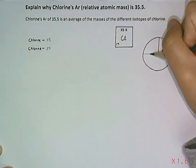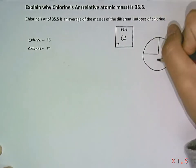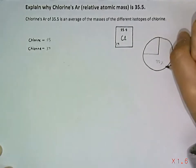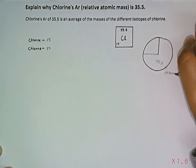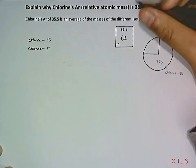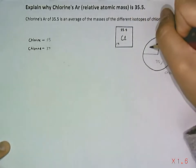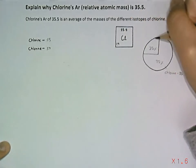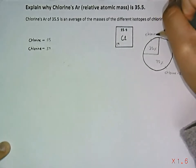75% of the isotopes are chlorine 35. And then, the remaining 25% are chlorine 37.